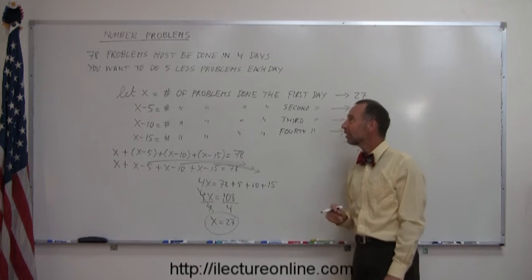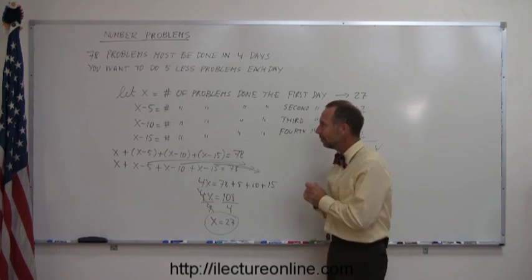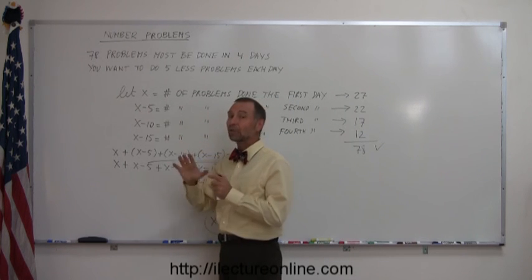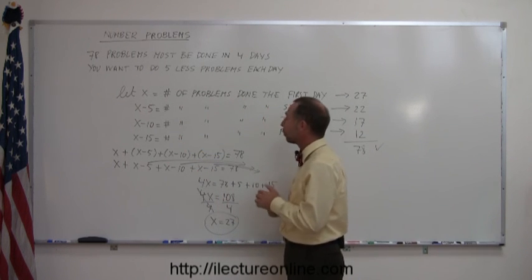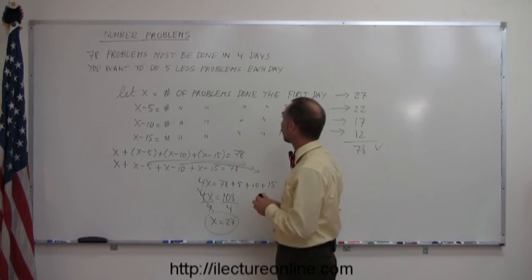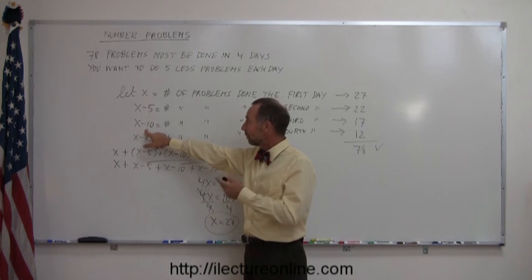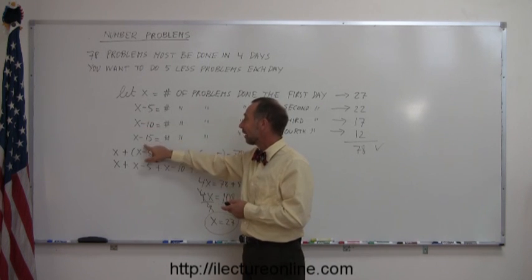So here again, a very nice example of how you deal with number problems. Typically, in summary, always let x be the smallest number if possible, or the first number. In this case, we let x be the number of problems done on the first day, five less on the second day, five less on the second day on the third, and five less on the third day on the fourth. Add them all up, should add up to 78. So if you work the problems this way, they're actually pretty simple and pretty straightforward.